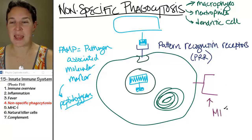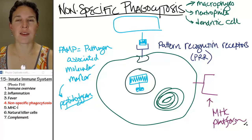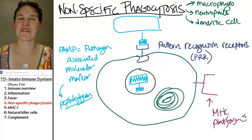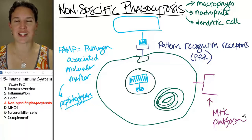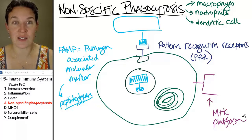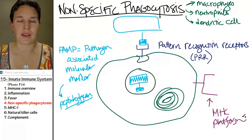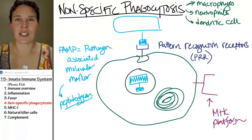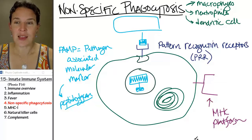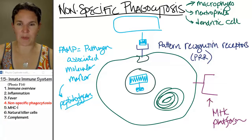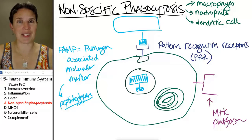That Facebook page is called an MHC platform. The idea of cells having Facebook platforms — telling you what they're doing, who they've eaten — that alone is reason enough to teach the immune system. So let's learn about this Facebook platform, this major histocompatibility complex.